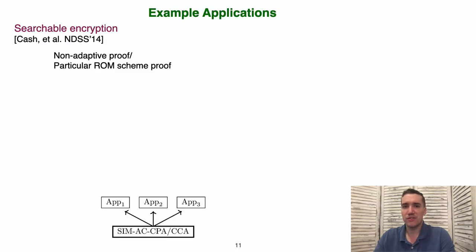For the searchable encryption scheme we consider, Cash et al. provided a thorough proof of non-adaptive security using standard security notions for encryption and PRFs. And they provided a brief sketch of a proof when using a particular random oracle-based construction. In our work, we reproved this result using our key private security notion for encryption and our PRF security notion.